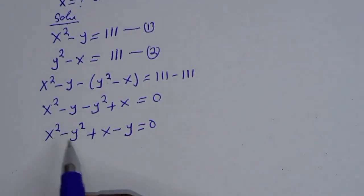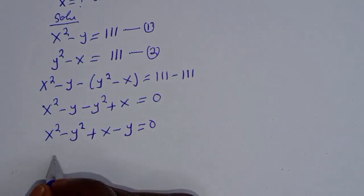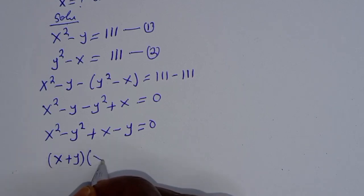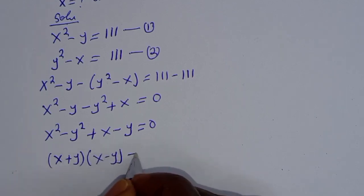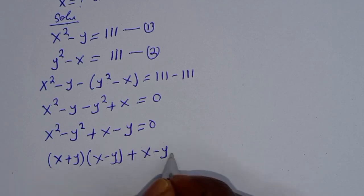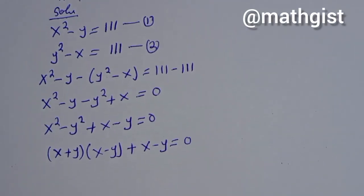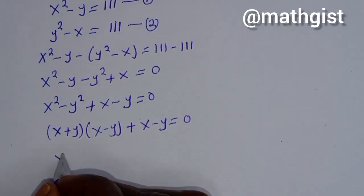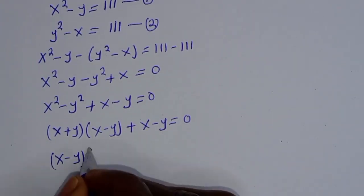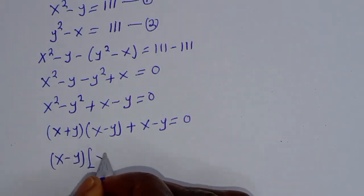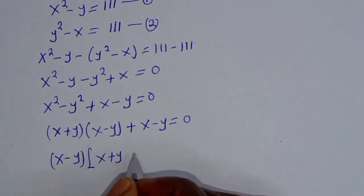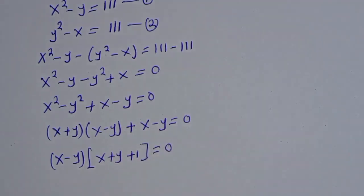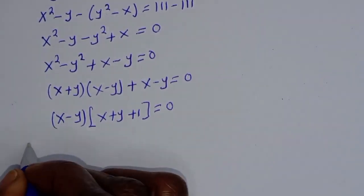Now x squared minus y squared is in the form of a difference of squares, which can be written as (x plus y)(x minus y). So we have (x plus y)(x minus y) plus (x minus y) equals 0. We can see that (x minus y) is a common factor, so we bring it out: (x minus y)(x plus y plus 1) equals 0. There are two cases here.